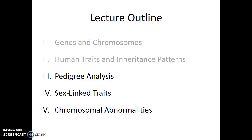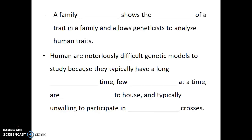Pea plants are great genetic models, as are fruit flies and mice. Humans, not so much. A family pedigree shows the inheritance of a trait in a family and allows geneticists to analyze human traits. The reason we need to do this is because humans are notoriously difficult genetic models to study.